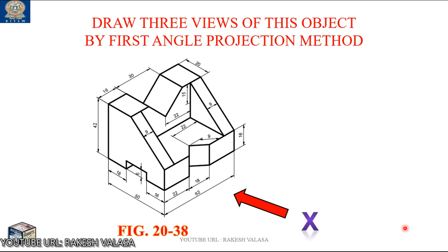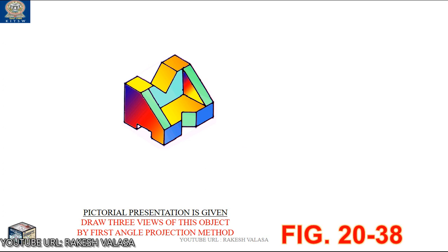Here X marks the observer position, indicating the front view direction. The three views means: one is the front view, the second one is the top view, and the third one is the side view. For easy understanding, let us see the 3D visualization. This is the pictorial representation of the given figure. For this sketch, we need to draw the 2D figures of front view, top view and side view.